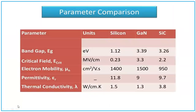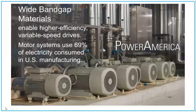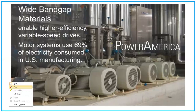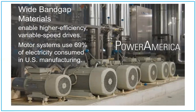We can compare parameters — not only band gap but others as well — for silicon versus gallium nitride. Silicon is the normal semiconductor. You can see the differences in band gap, critical electric field, electron mobility, permittivity, and thermal conductivity between silicon and wide band gap materials.